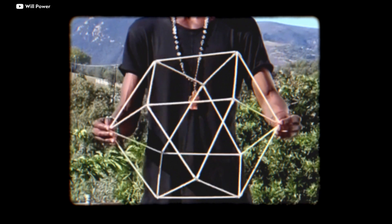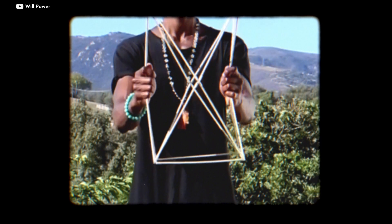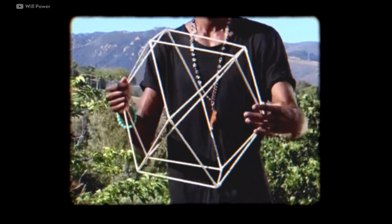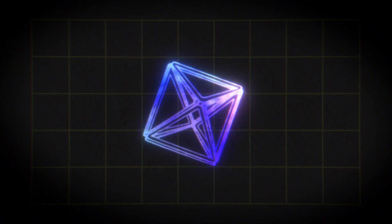Fuller discovered that this shape can transform into other regular geometric shapes, showing these shapes as different forms of the same configuration. He explained that these transformations represent different stages in the dynamics of energy.